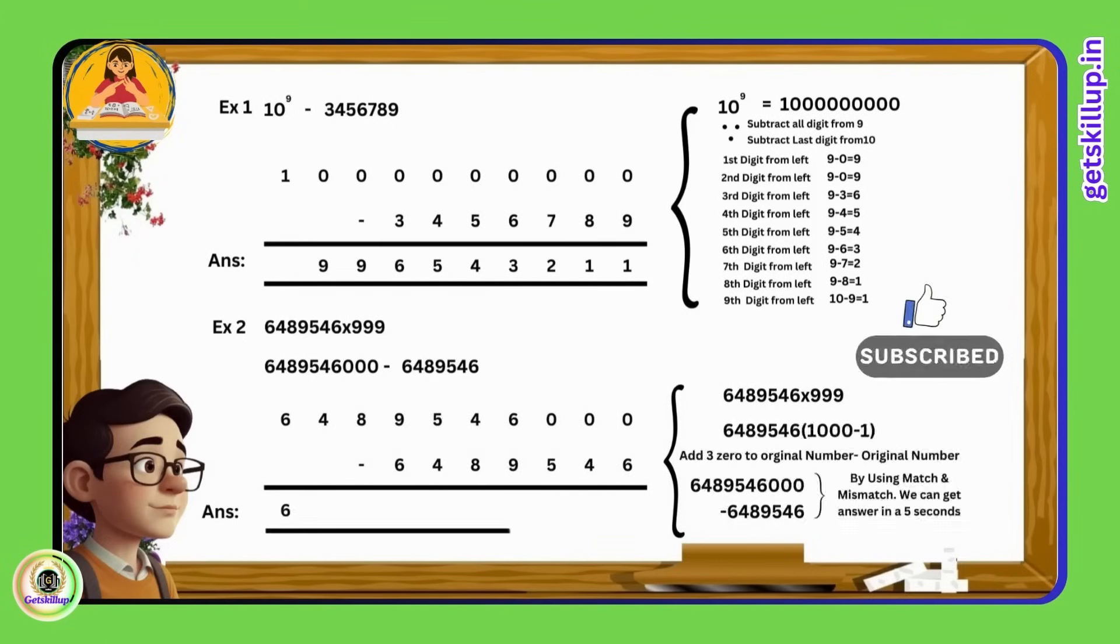The first digit, 6 minus 0 becomes 6. The second digit, 4 minus 0 becomes 4. The third digit, 8 minus 0 becomes 8. 9 minus 6 becomes 3. 5 minus 4 equals 1. But due to the next pair mismatch, 1 minus 1 becomes 0. The complement of 8 is 2, and 4 becomes 6. 6 minus 1 becomes 5.